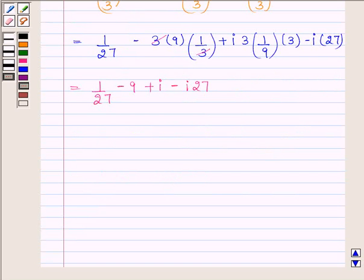and this is equal to, now solve the real part and imaginary part separately, 1 by 27 minus 9 is equal to minus 242 upon 27, iota minus iota 27 is equal to minus 26 iota.